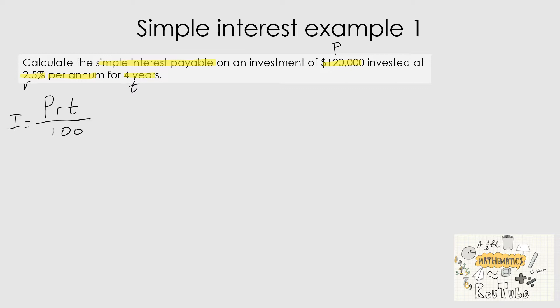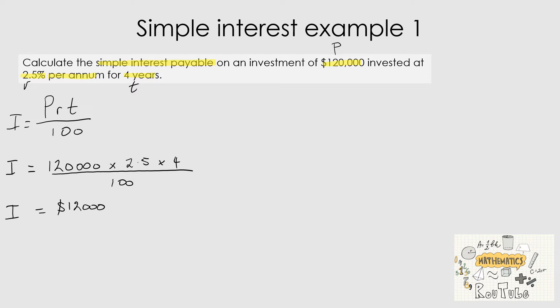Substituting into the formula: I = 120,000 × 2.5 × 4 ÷ 100. Putting that into the calculator gives us $12,000. So the simple interest payable on that investment is $12,000.